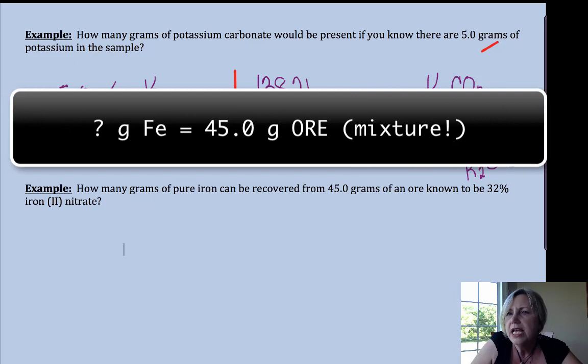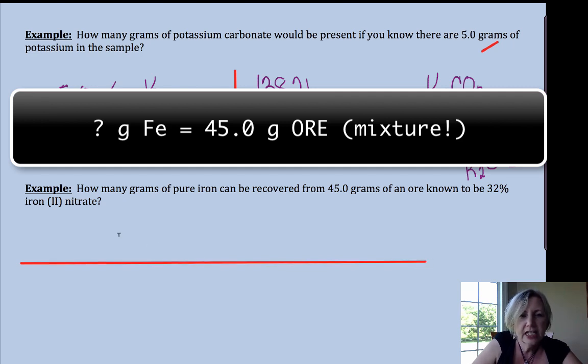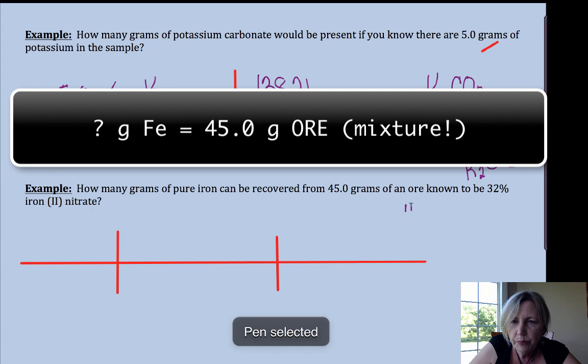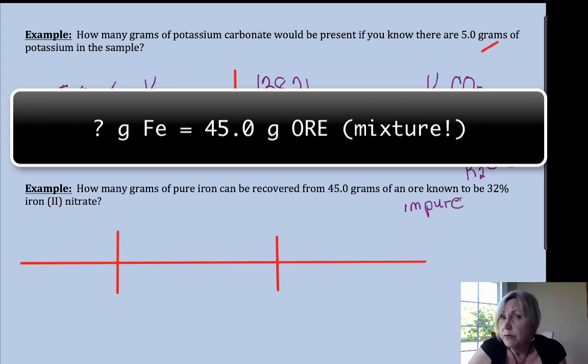All right, one more because this one uses a percent, but instead of within a pure compound we're going to look at including percentages of a mixture. So an ore is an impure sample. Impure samples don't have a molar mass. They're mixtures of compounds.